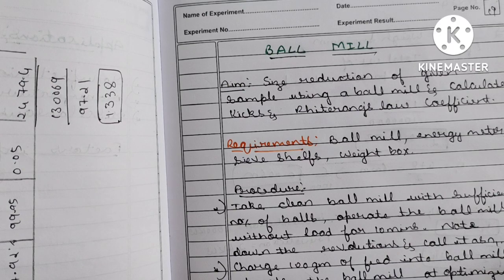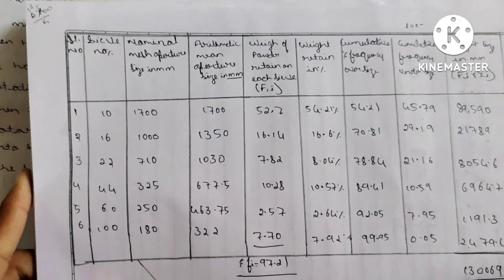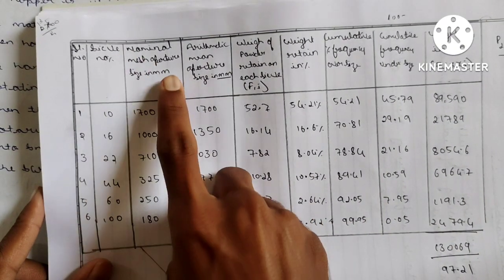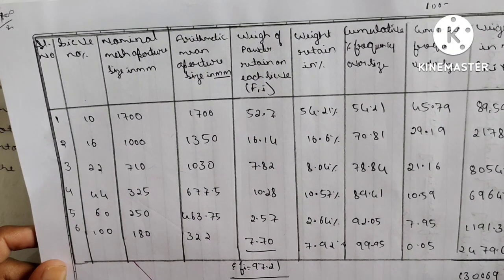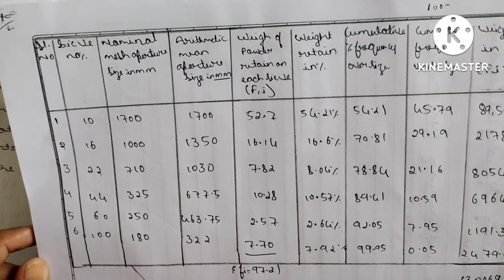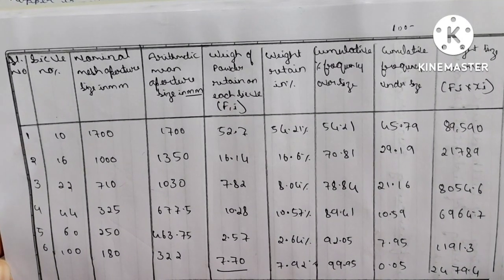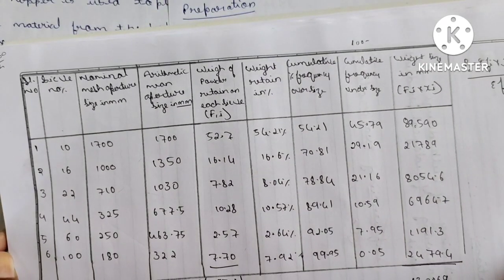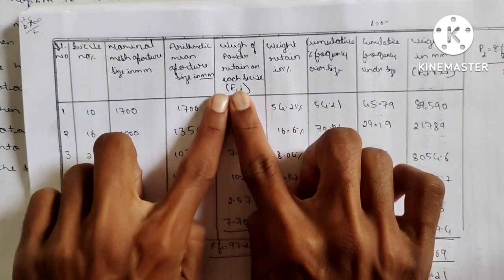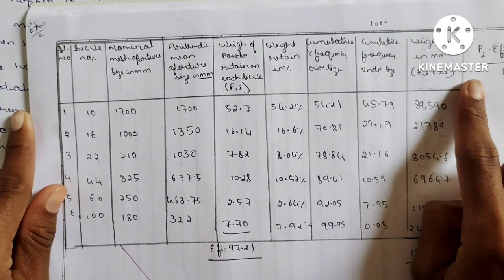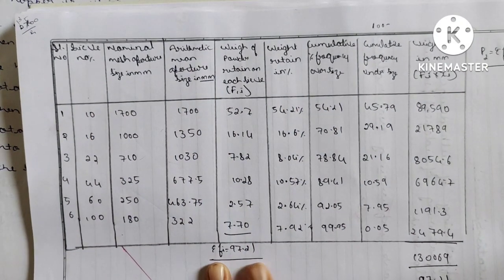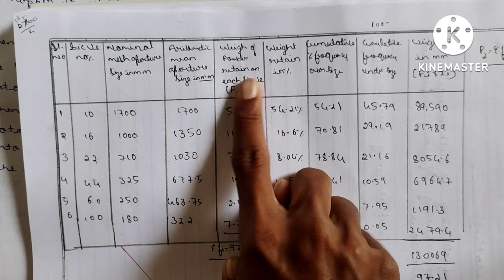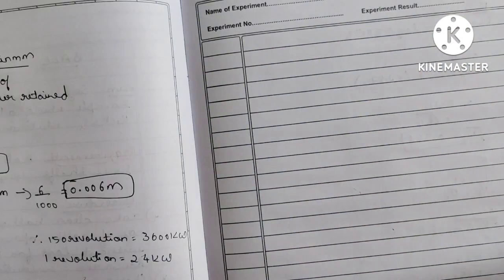For the ball mill tabular column, you need to practice these headings: serial number, nominal mesh aperture in mm, arithmetic mean, weight of powder retained on each sieve, weight retained in percentage, cumulative percentage frequency oversize, cumulative frequency undersize, and weight size in mm. The σfd calculation is very important — from that only you will calculate further values.